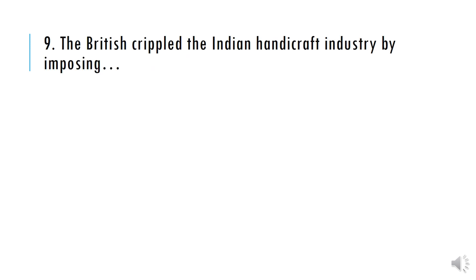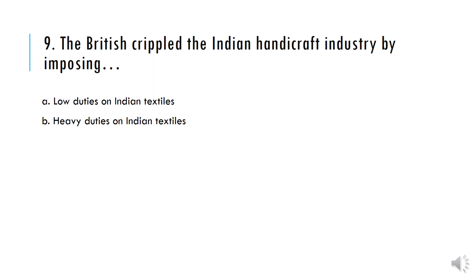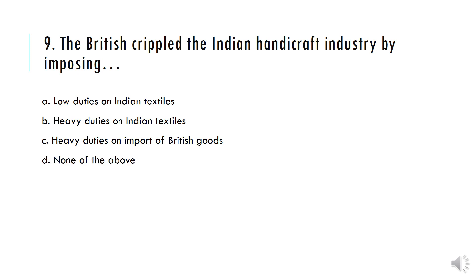The British crippled the Indian handicraft industry by imposing: A) Low duties on Indian textiles, B) Heavy duties on Indian textiles, C) Heavy duties on import of British goods, D) None of the above. And the correct answer is Option B — Heavy duties on Indian textiles.